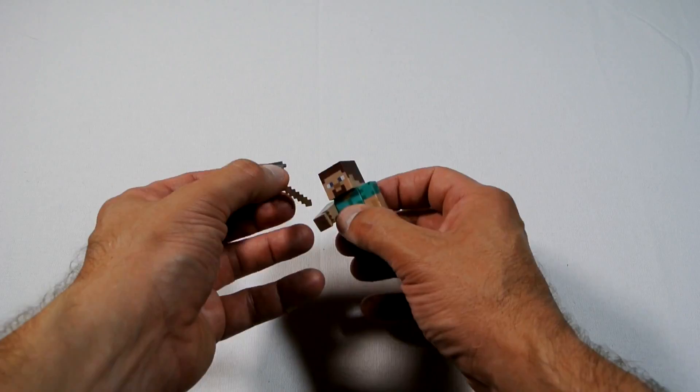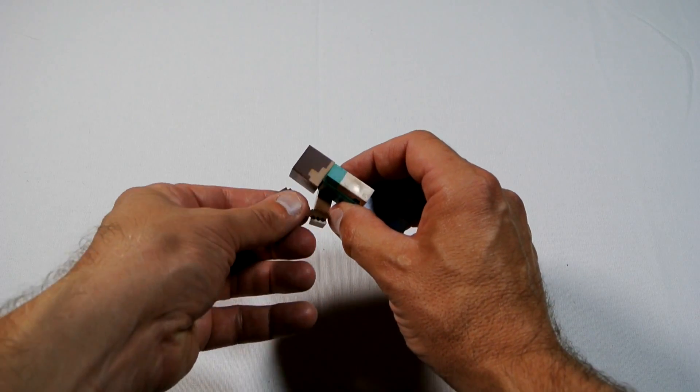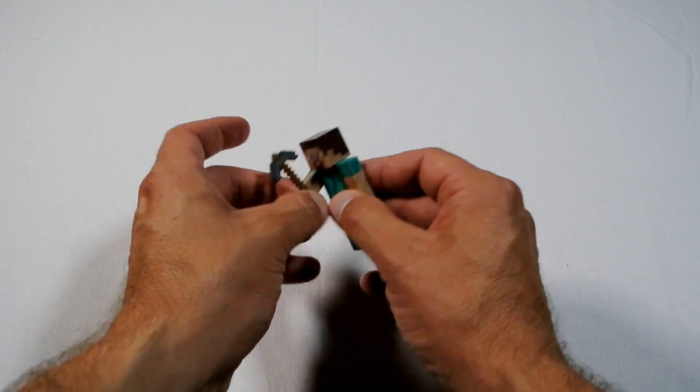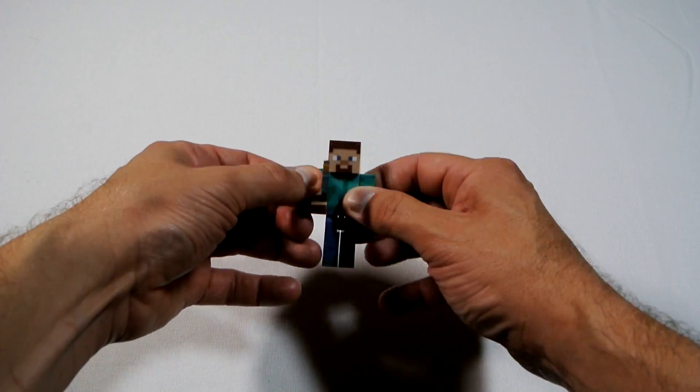You've also got this little pickaxe type thing and you can see this little groove which you can match in to put it into his hand. So now you've got movement up and down with the pickaxe